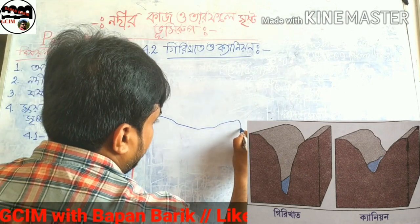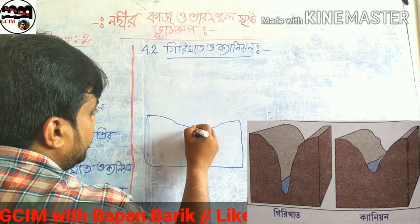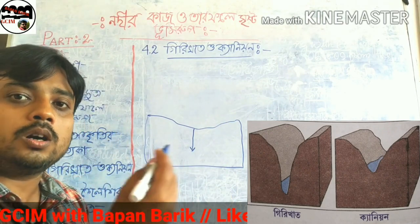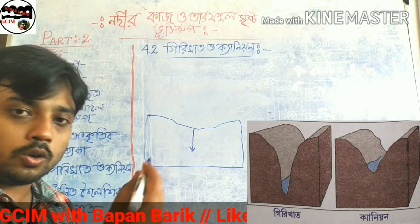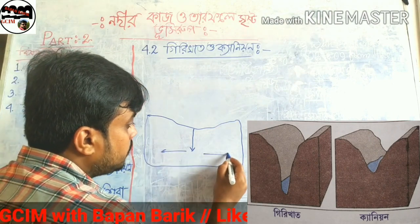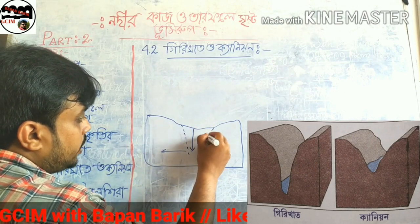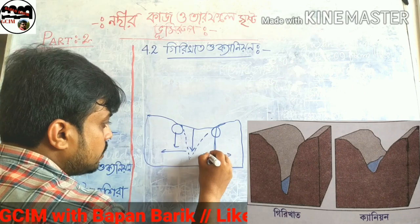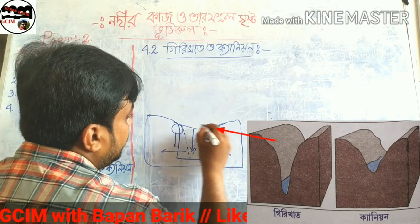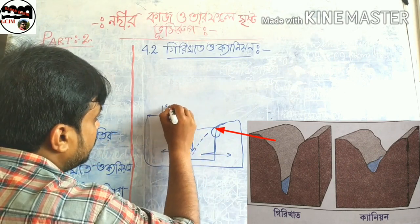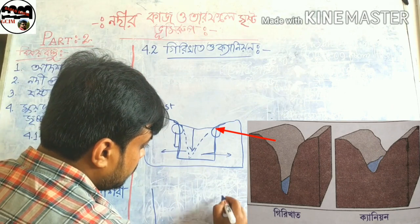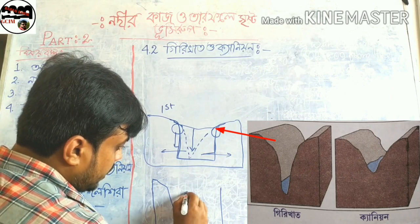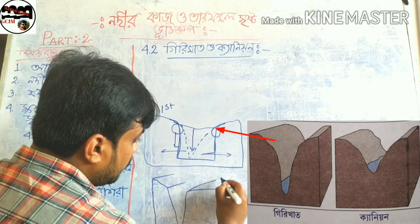Now what happened is that a particular landform developed through the erosion process. In the first step of erosion, vertical erosion is very fast. In the second step, because of this landform, the river creates a very sharp, steep, narrow valley — this is how a gorge or canyon is formed.